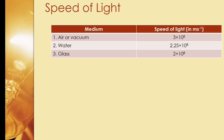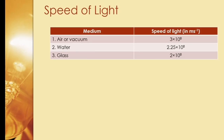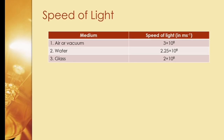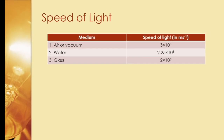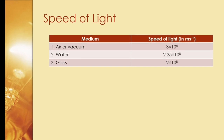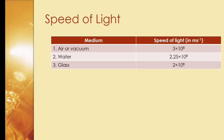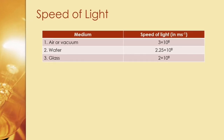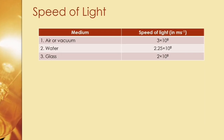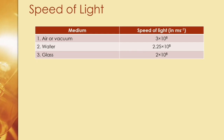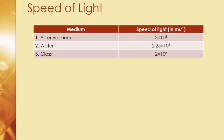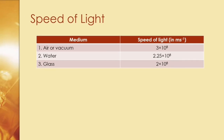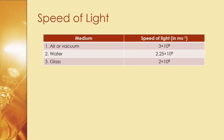Objects through which light can pass or travel are called transparent objects, such as air, water, glass, etc. Light travels at different speeds in all these different mediums. In air or vacuum, it travels at 3 × 10⁸ meters per second. In water, it travels at 2.25 × 10⁸, and in glass, it travels at 2 × 10⁸ meters per second.